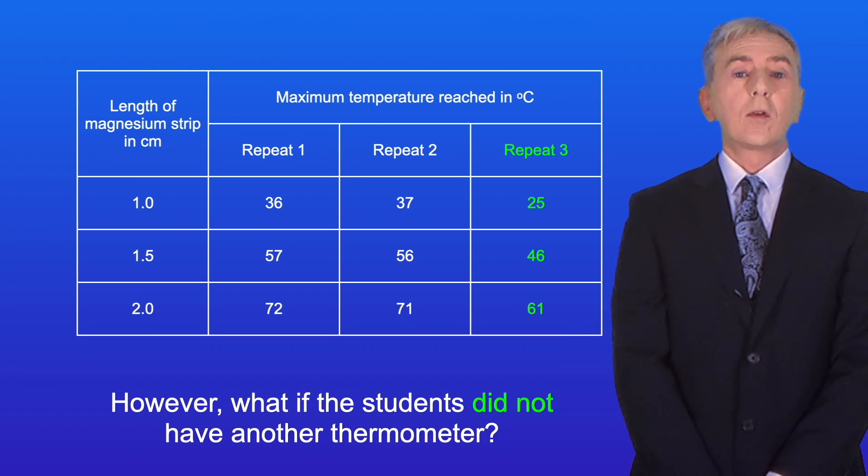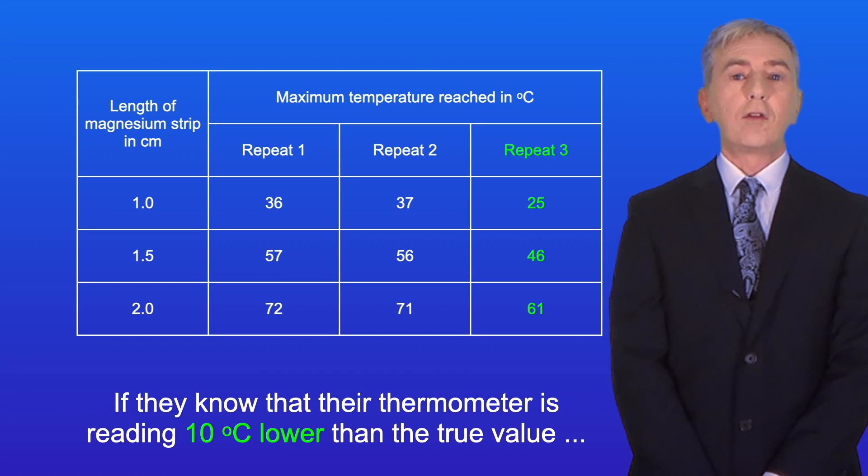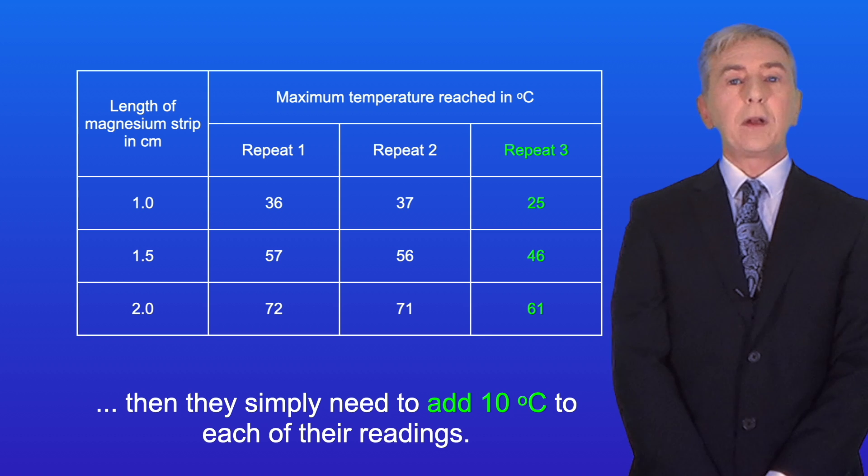However, what if the students did not have another thermometer? Well, if they know that their thermometer is reading 10 degrees celsius lower than the true value, then they simply need to add 10 degrees celsius to each of their readings.